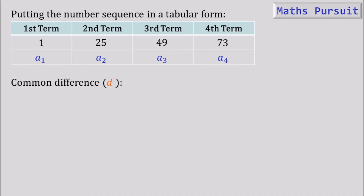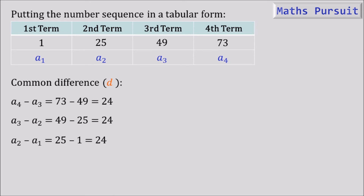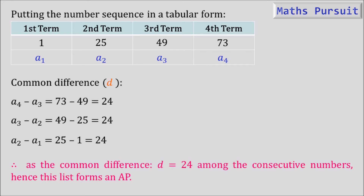Now let's find the common difference D by taking the difference of consecutive terms. A4 minus A3 = 73 − 49 = 24. A3 minus A2 = 49 − 25 = 24. A2 minus A1 = 25 − 1 = 24. Since the common difference D = 24 is constant across all consecutive terms, this list forms an AP.